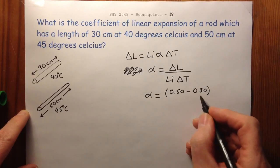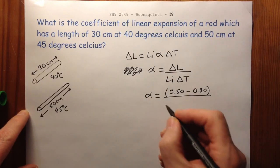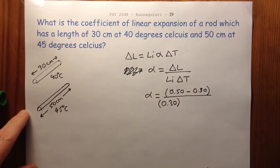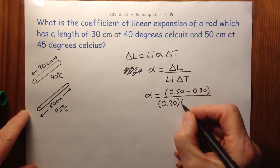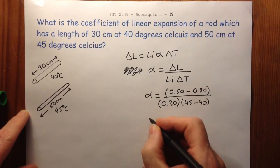So it's 50 centimeters minus 30 centimeters over the original length, which was 0.30 or 30 centimeters, times the temperature change, and the temperature change is 45 minus 40.